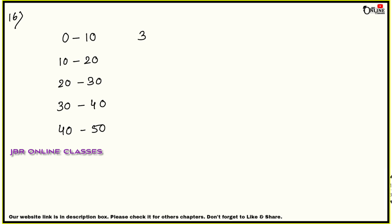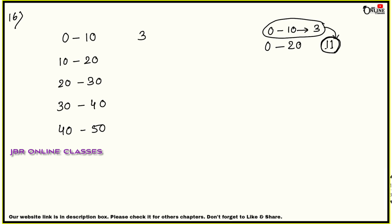'Up to 20' means 11 students total from 0–20. Since 0–10 already has 3 students, the frequency for 10–20 is 11 − 3 = 8. Similarly, 20–30 frequency = 28 − 11 = 17. The given 'number of students' column is actually cumulative frequency, so we convert it to regular frequency by subtracting successive values.